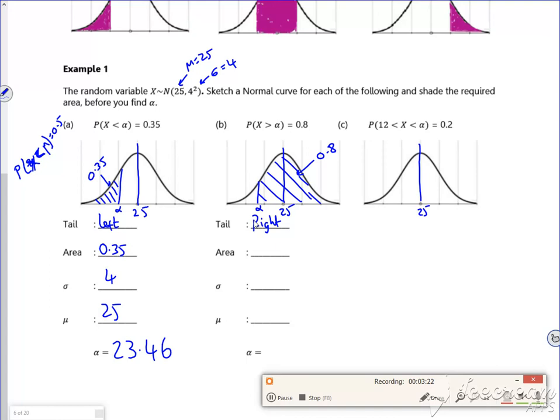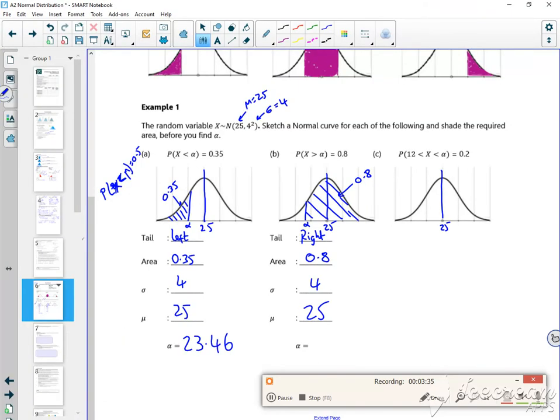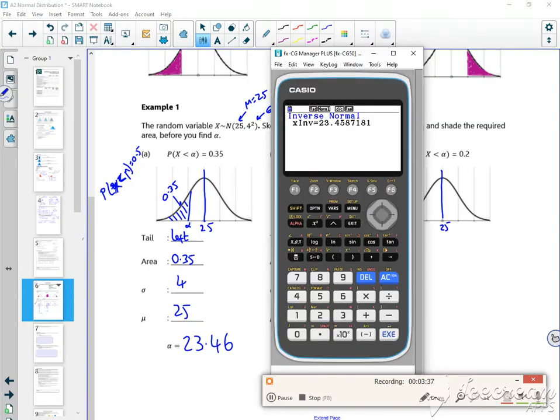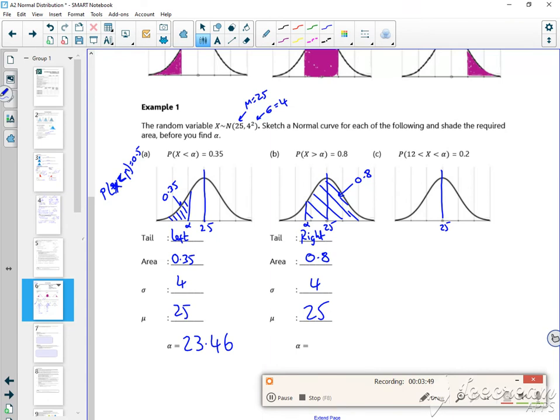The area is 0.8, sigma is 4, and mu is 25, so stick that in your calculator with a right hand tail. Exit, so right hand tail 0.8 - I think it was 21.63, so 21.63 is my value.